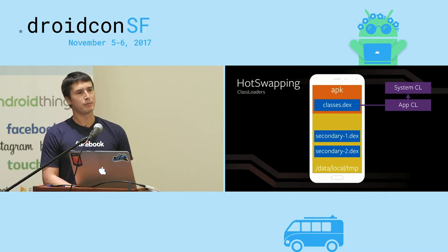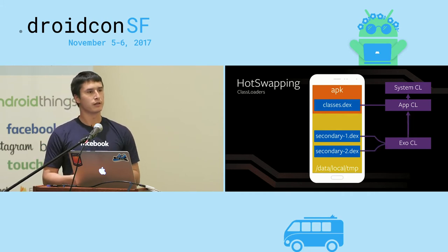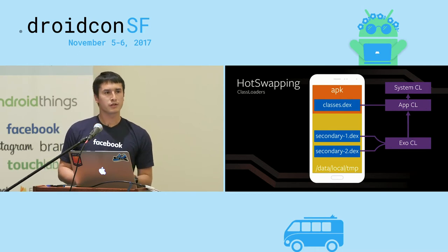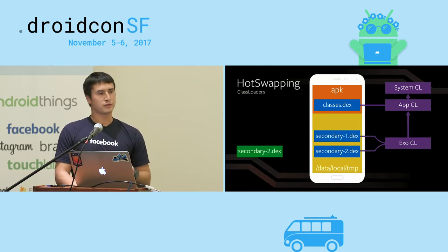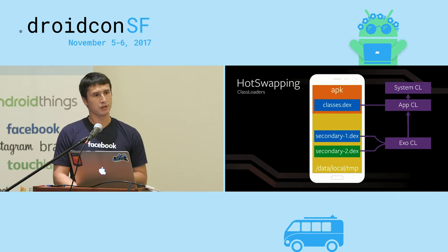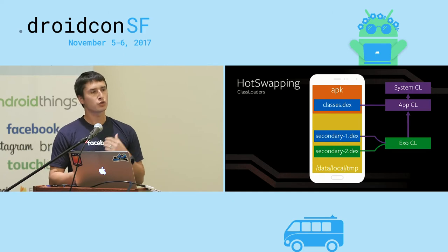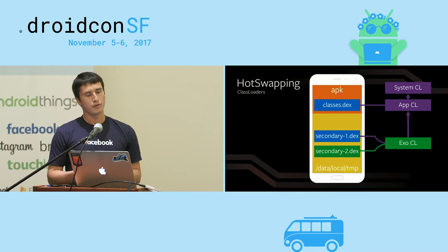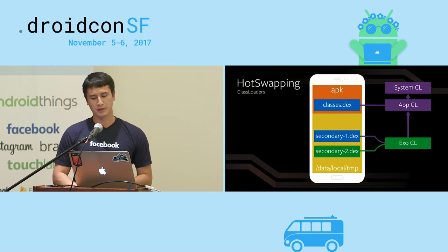The way we enable Hotswap is we write our own class loader — the exopackage class loader — responsible for loading code from those secondary dex files. When we want to Hotswap, we take our recompiled code, push it into that temporary directory, and notify the exopackage class loader that new code is available and it should refresh its definition. When code is requested, we ask this exopackage class loader for the class definition, it provides the new definition, and the system can continue from there.